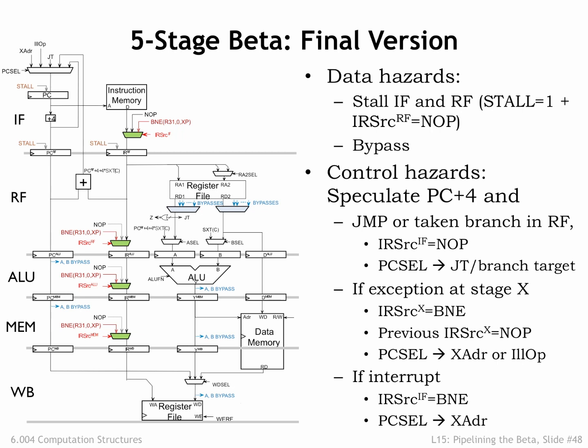All this extra circuitry has been added to ensure that pipelined execution gives the same result as unpipelined execution. The use of bypassing and branch prediction ensures that data and control hazards have only a small negative impact on CPI. This means that the much shorter clock period translates to a large increase in instruction throughput.